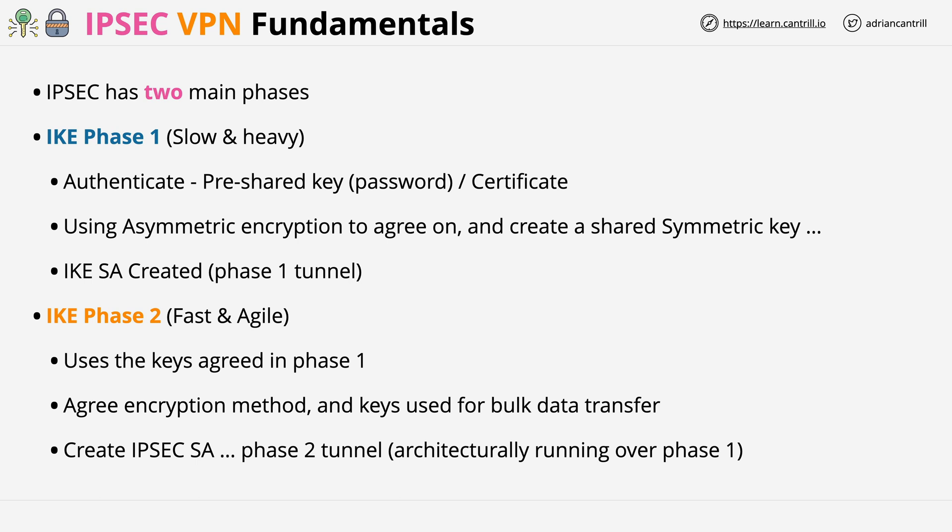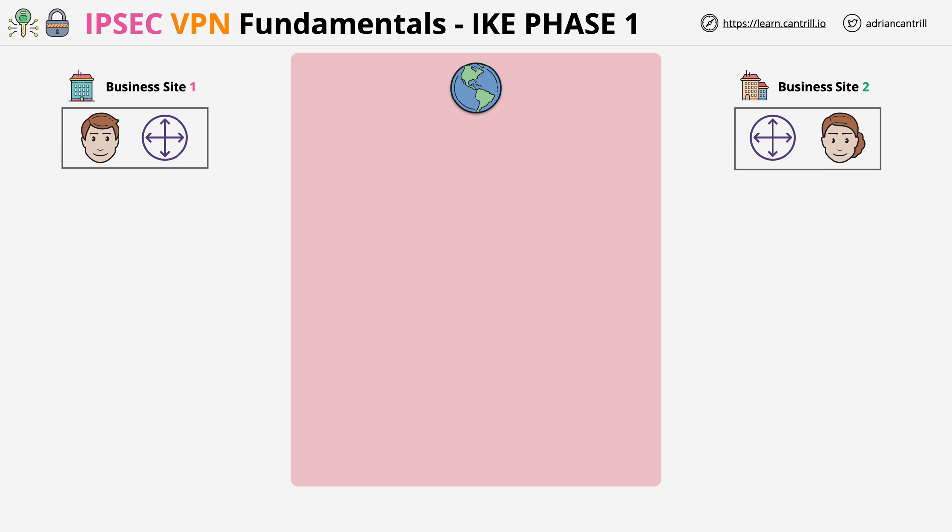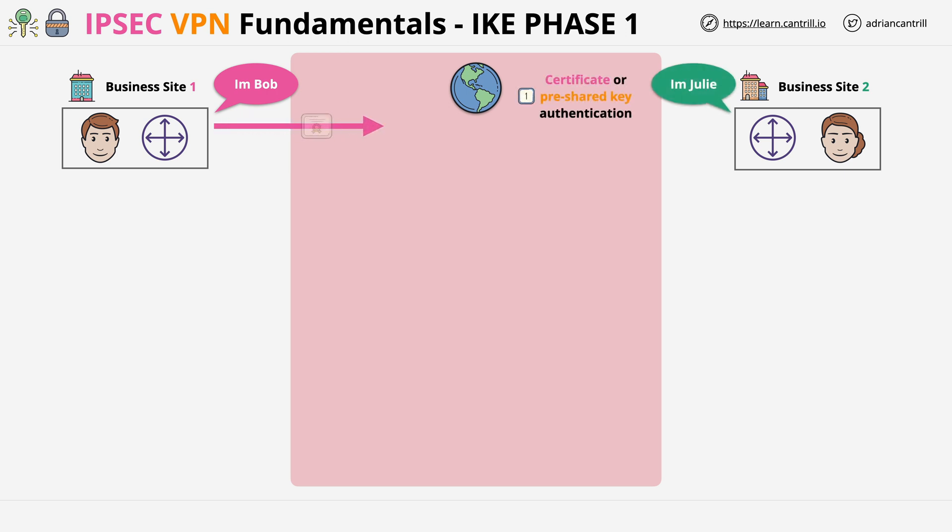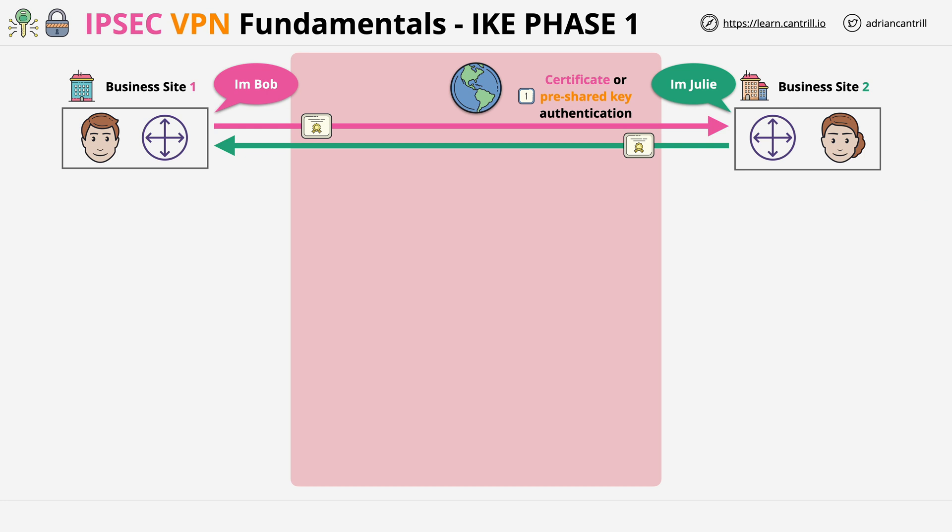Let's look at how this all works together visually. This is IKE Phase 1. The architecture is simple: two business sites — Site 1 on the left with user Bob, and Site 2 on the right with user Julie — with the public internet in the middle. The very first step is that the routers, the two peers, need to authenticate — prove their identity using certificates or pre-shared keys. This isn't yet about encryption; it's about proving identity, confirming that both sides agree the other should be part of this VPN. No keys are exchanged — it's just about identity.